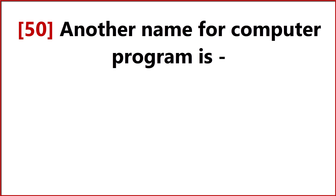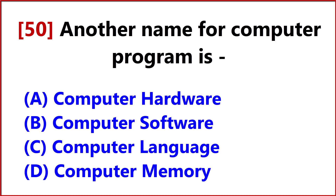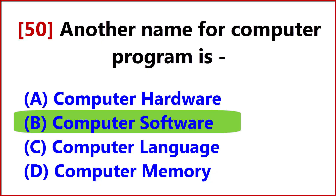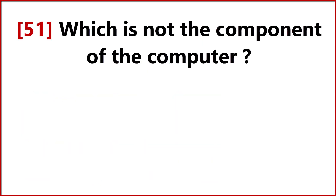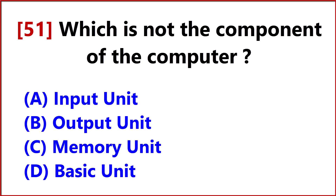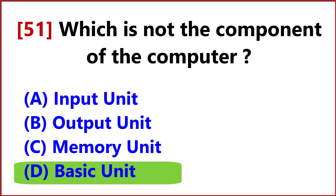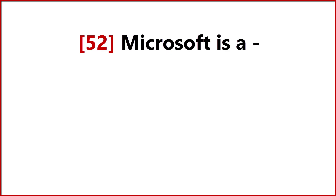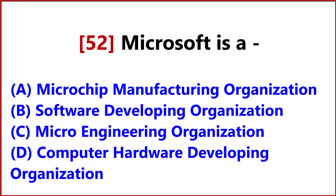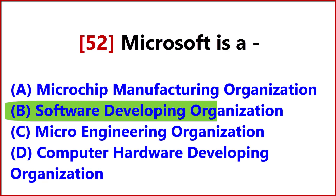Another name for a computer program is Answer, Option B, Computer Software. Which is not the component of the computer? Answer, Option D, Basic Unit. Microsoft is a Answer, Option B, Software Developing Organization.